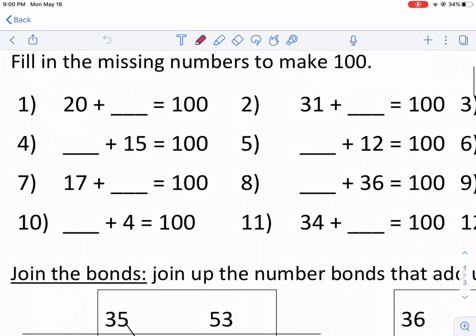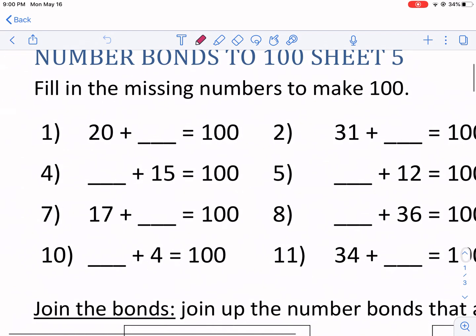What is a number bond? It's a combination of two numbers that adds up to a different sum, in this case 100. It's basically the introduction to algebra. What missing value will help you get to 100?